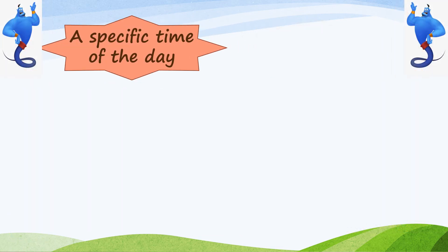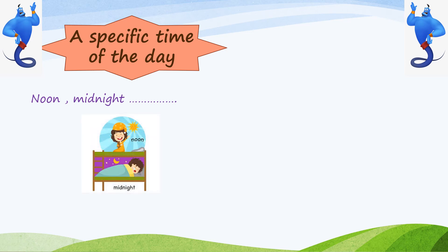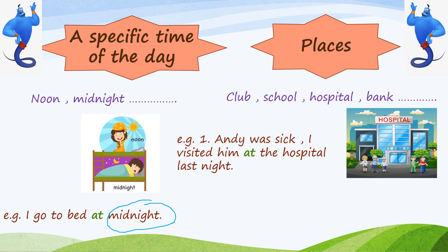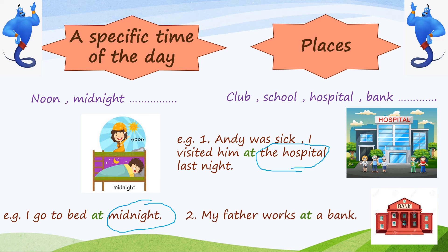Do you put 'at' before a specific time of the year only? No, of course — we also put it before a specific time of the day, such as noon, midnight, and so on. For example, I go to bed at midnight. Midnight is my specific time of the day, so I have to put 'at' before it. And finally, we put 'at' before places, such as club, school, hostel, bank, and so on. For example, Andy was sick — I visited him at the hostel last night. My place is the hostel, so I put 'at.' Second example: my father works at a bank. A bank is a place, so I have to put 'at' before it.